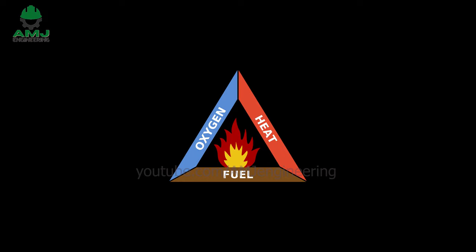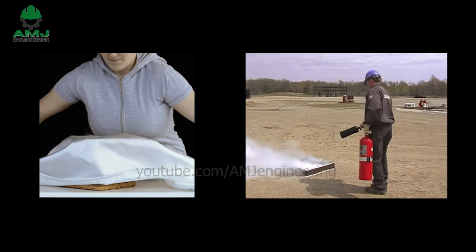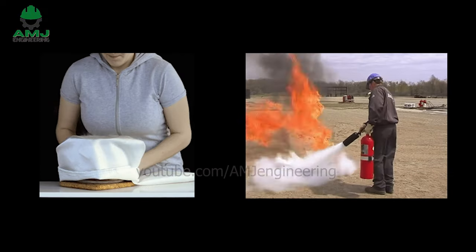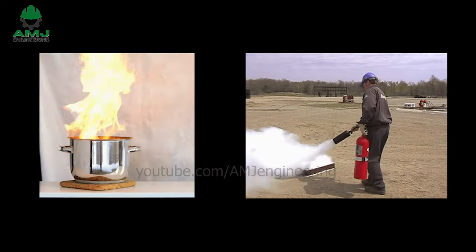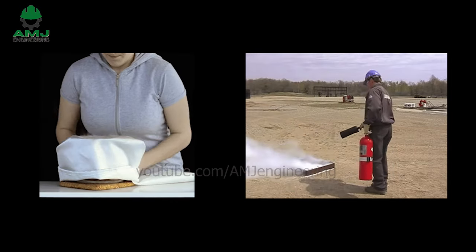Third, to sustain the combustion reaction, oxygen is needed, as it reacts with the burning fuel to release heat and CO2. Earth's atmosphere consists of 21% oxygen, so there is plenty available to trigger a fire if the other two components are present. Fire blankets and certain fire extinguishers remove the oxygen side of the triangle by displacing it, causing suffocation and thereby ceasing the combustion reaction.